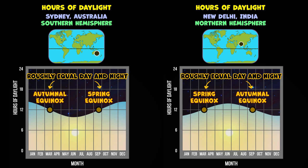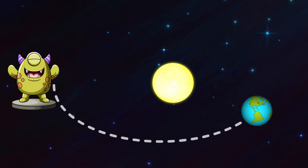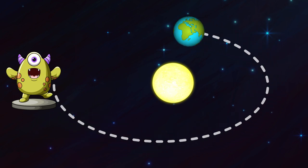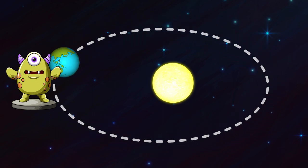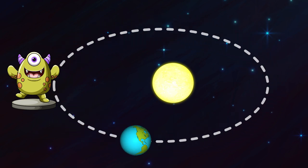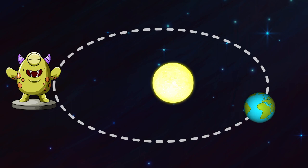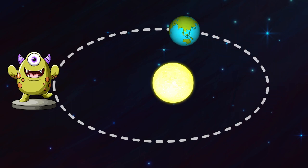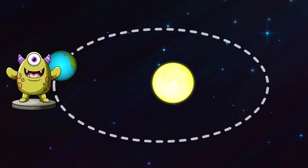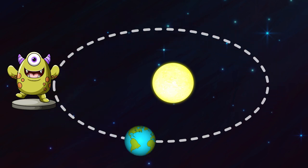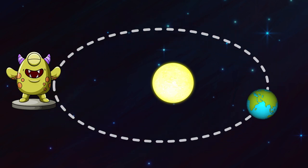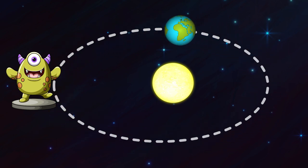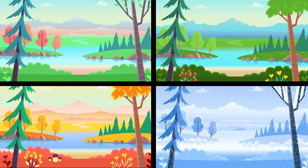When the Earth completes its orbit, a new year begins, and the cycle of Earth's seasons continues over and over again. Okay, I'm hungry now. Time for a delicious alien snack. Thanks, Allie.